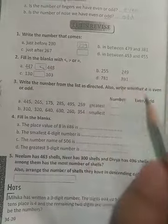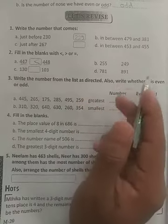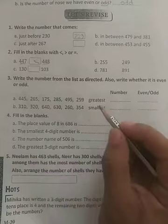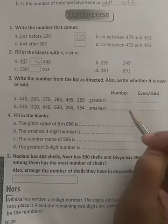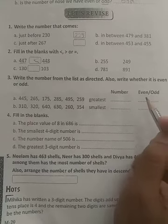Okay, so like this we have to solve this also. Write the number from the list as directed. Also write whether it is even or odd. Now here we have to write even or odd, and here we have to write greatest number and smallest number.